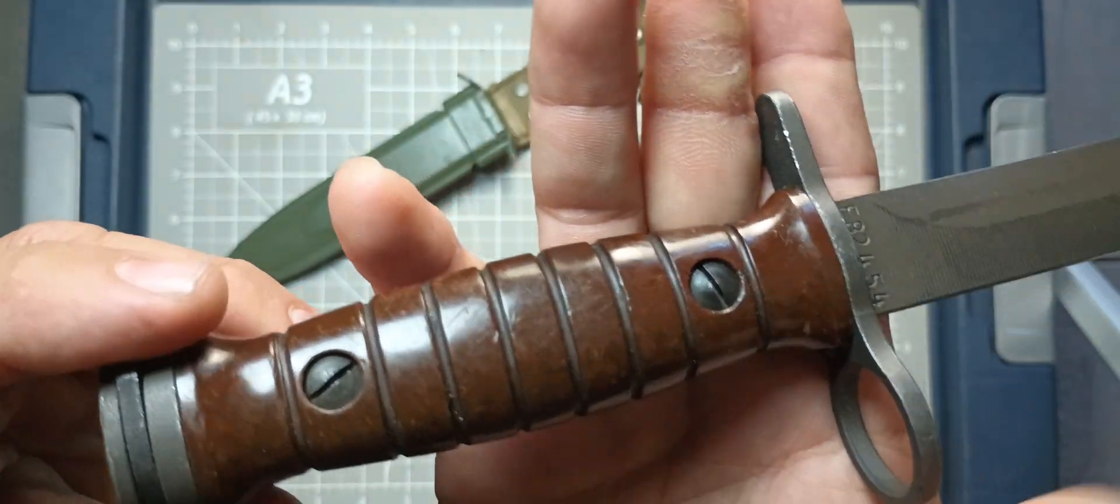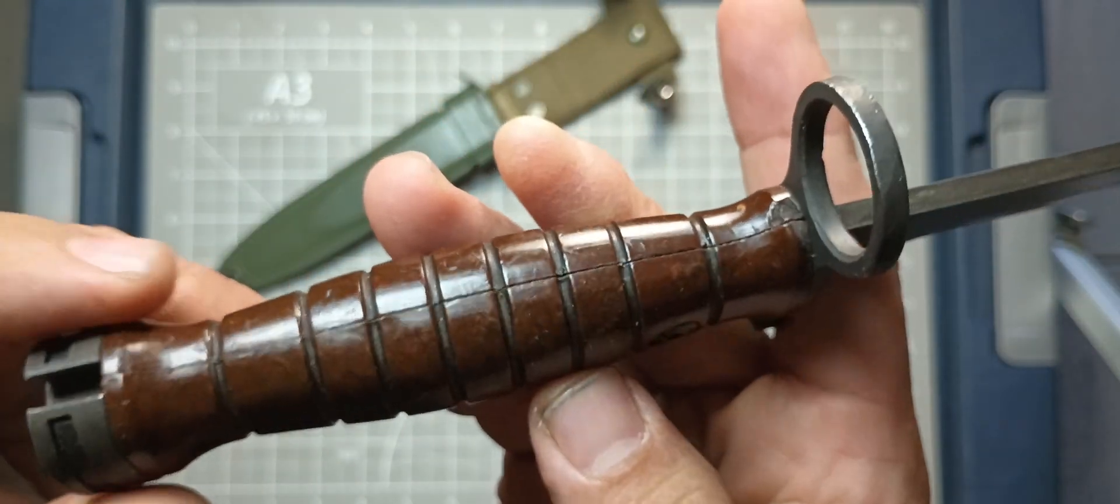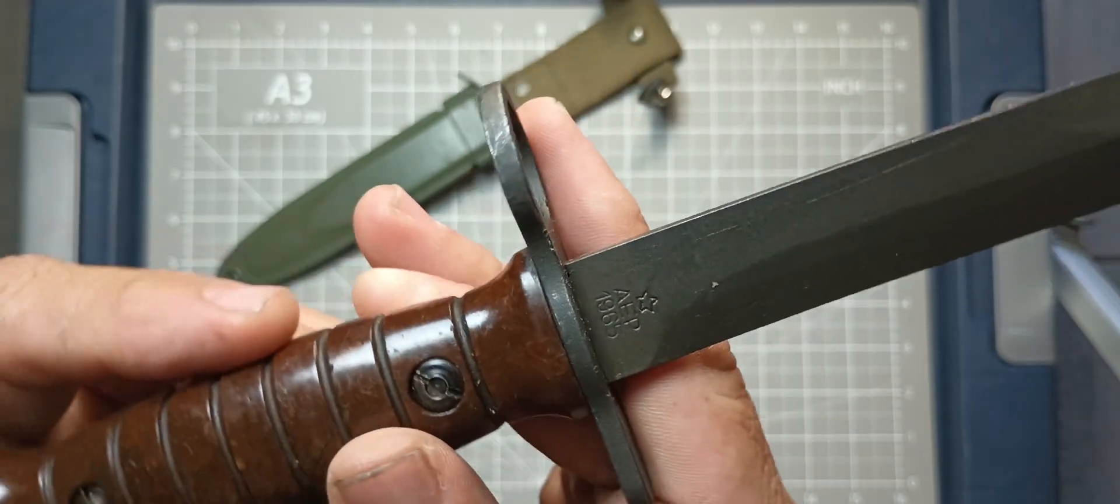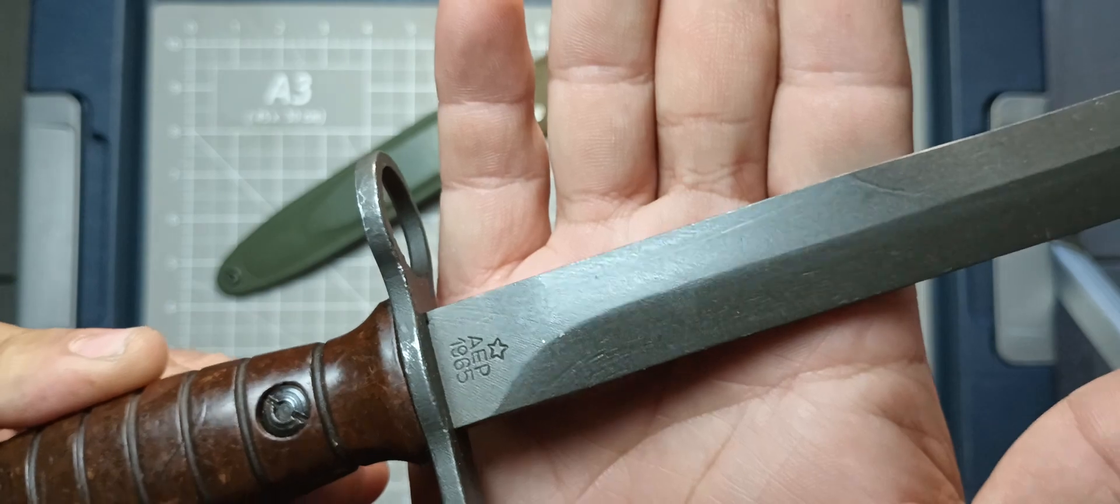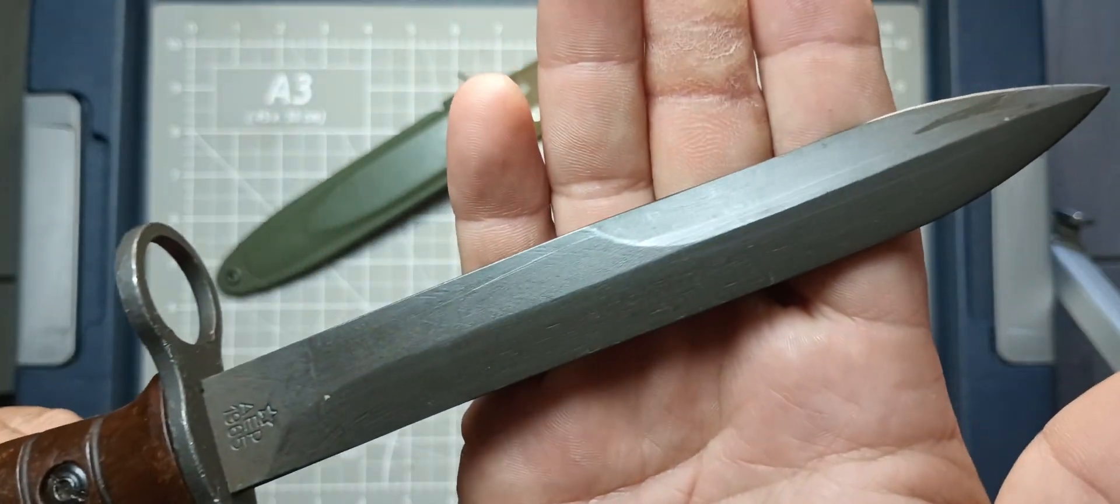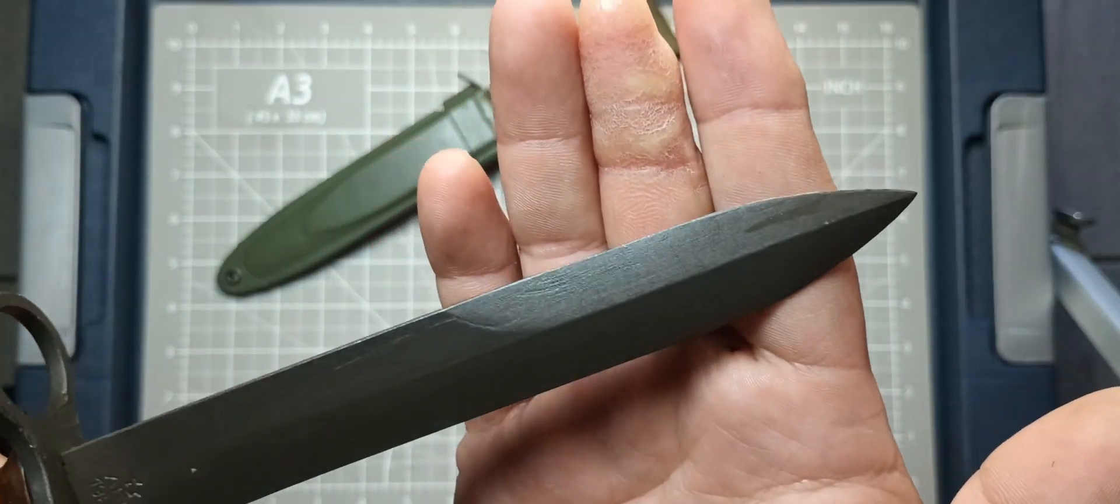Beautiful bayonet bakelite handles. It's stamped right there, A-E-P-1965. Some machine marks right here, as you can see. This one I kept oiled.